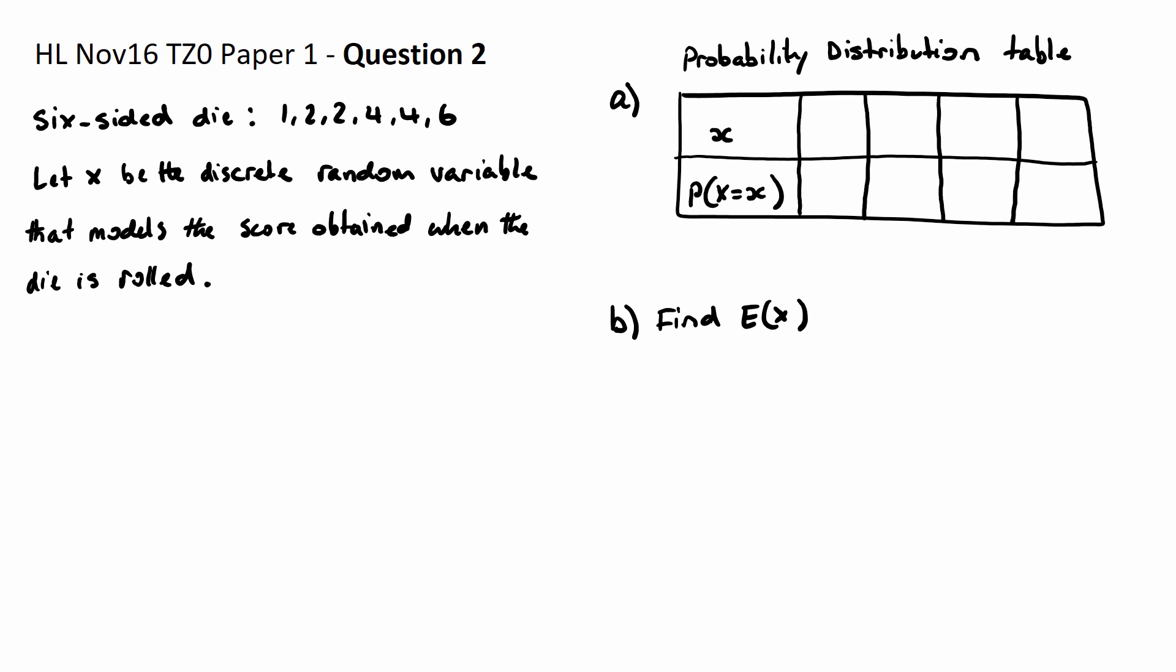Question 2. It says the faces of a six-sided die are numbered 1, 2, 2, 4, 4, and 6.